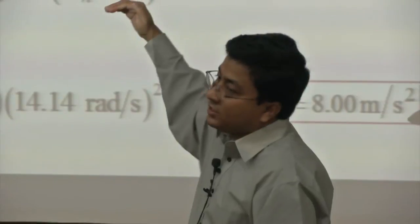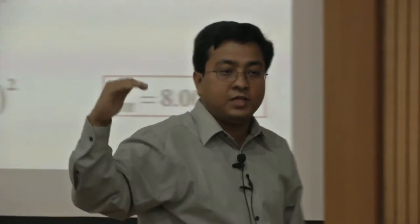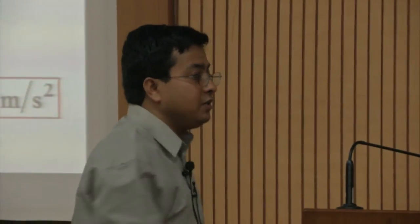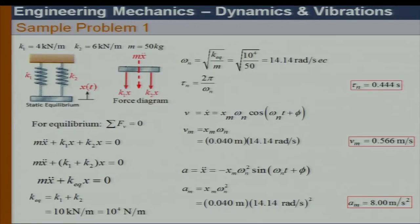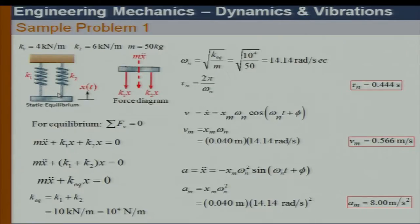Assume the oscillation starts from the static equilibrium configuration as reference. If I displace the system upward by x, these springs are going to be in compression. With displacement x, we have K₁·x and K₂·x. Since the body is moving upwards, the inertia force will be downward.